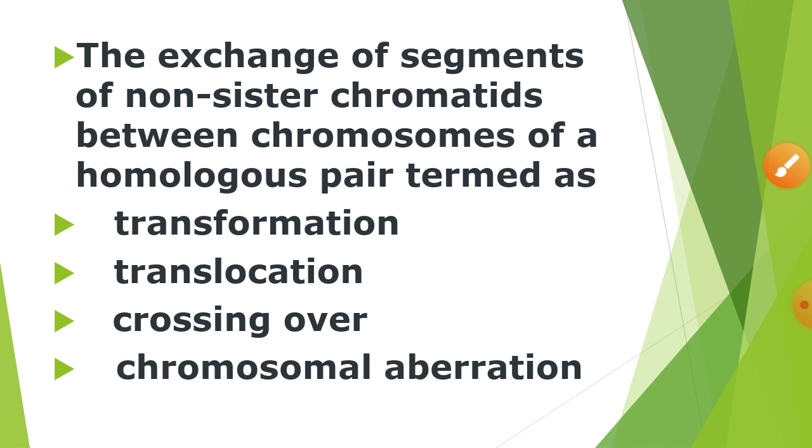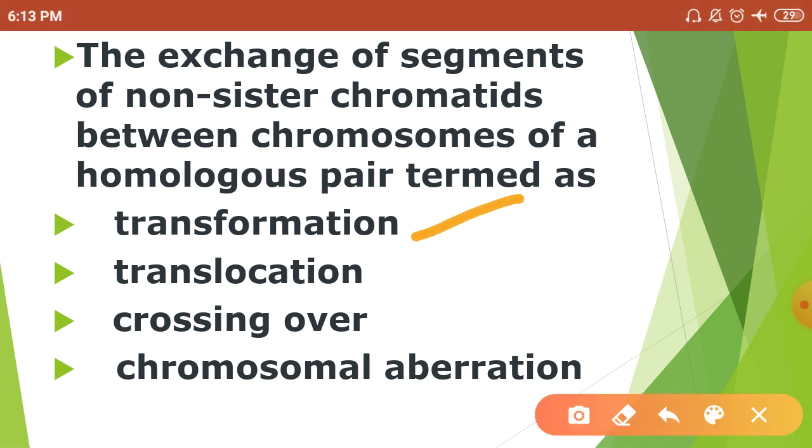Next question: The exchange of segments of non-sister chromatids between chromosomes of the homologous pair is termed as transformation, translocation, crossing over, or chromosomal aberration. The correct answer is translocation.